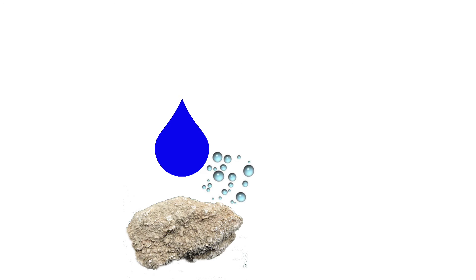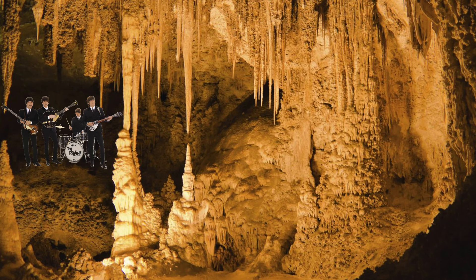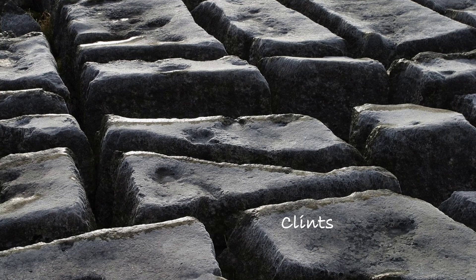The solution running off the surface creates runnels, slightly deepened channels. The chemical weathering widens the joints, helping water get below the surface to create caverns deep underground. The flat weathered surface is known as a clint and the gaps between them are called grikes. This is how a limestone pavement is formed.